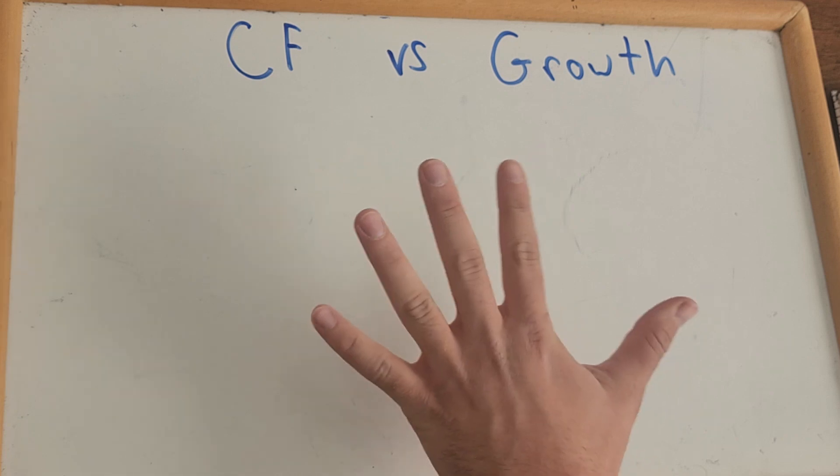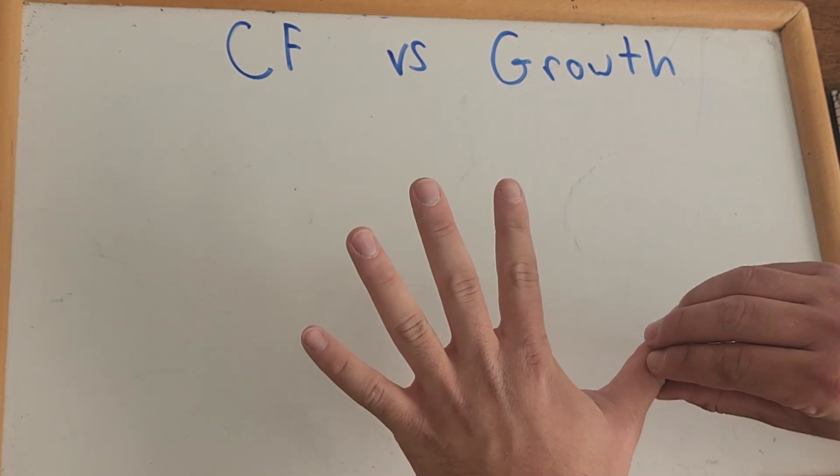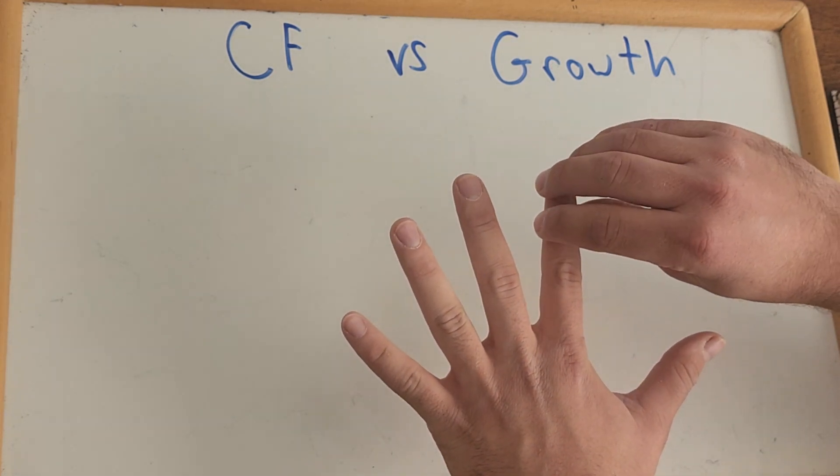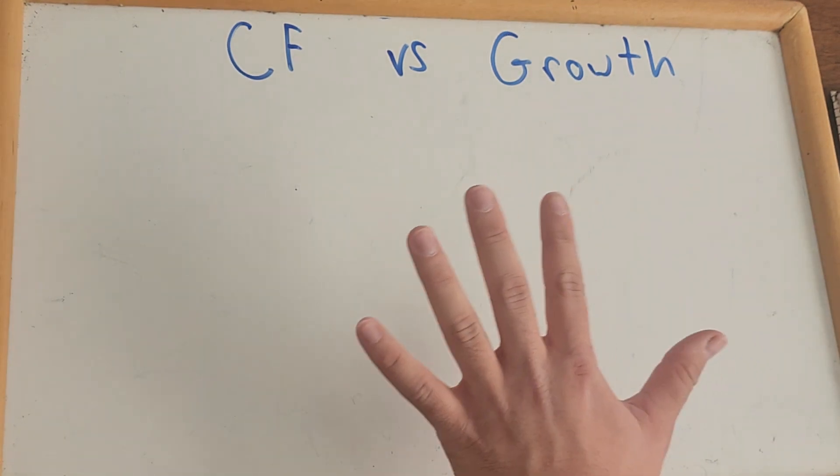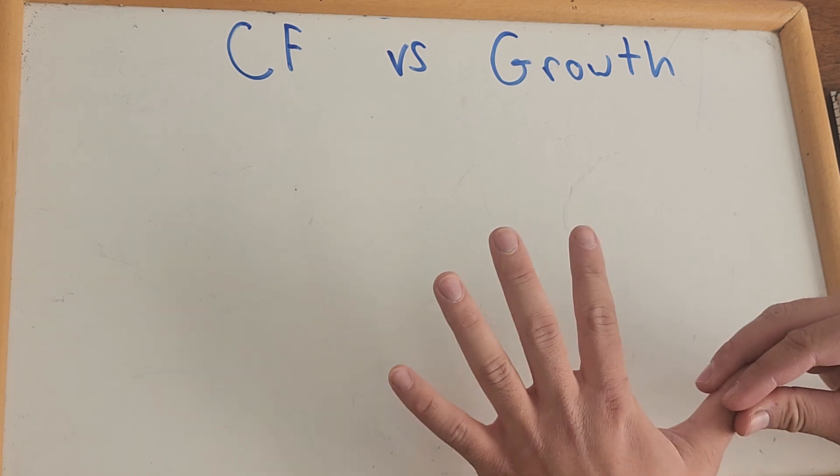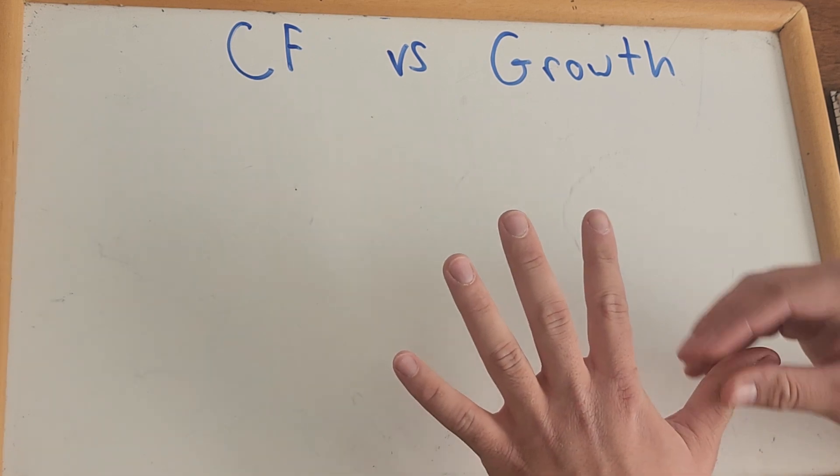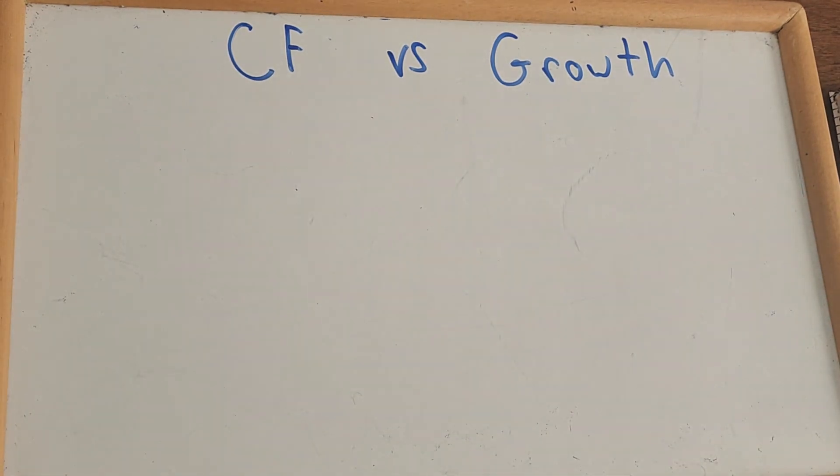So there's five ways to make profit in real estate. We've got appreciation, we've got cash flow, tax advantages, massive income opportunities, and leverage. So we're talking about the relationship between appreciation and cash flow. And this is a very important relationship because most people want cash flow, and they're very afraid of their home value going down or their home value not going up as much as they would hope.